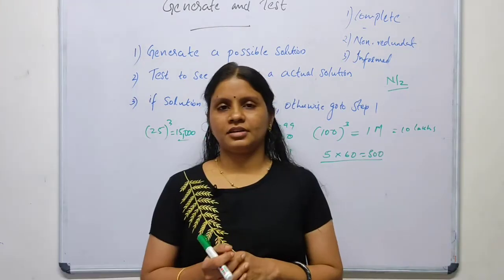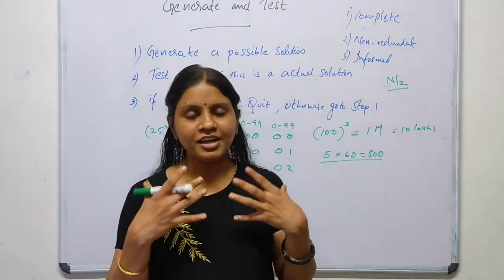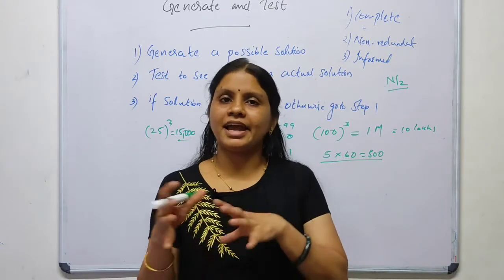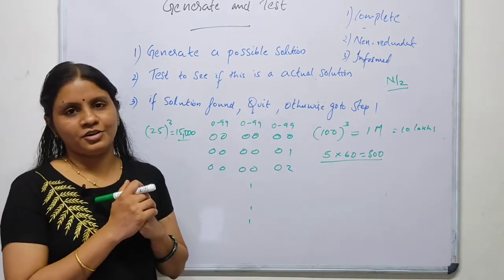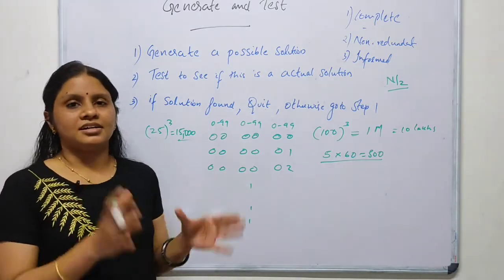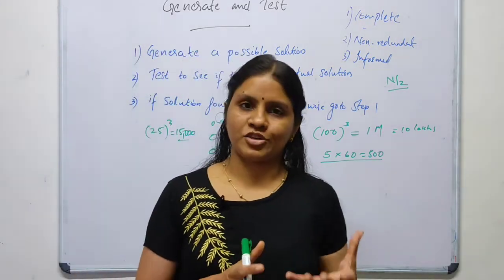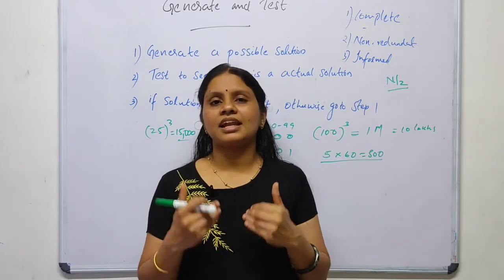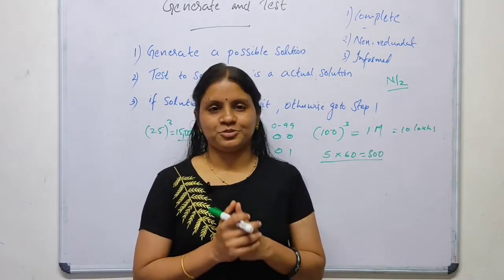We can conclude that if we find a good heuristic, our time complexity can be reduced. The better the generator, the lesser the time complexity. However, in the worst case, both time and space complexity will be exponential. That's all about Generate and Test search in AI — a simple heuristic algorithm using DFS with backtracking. In the next video, we'll discuss the hill climbing algorithm.